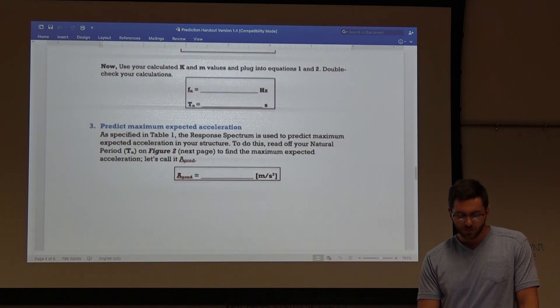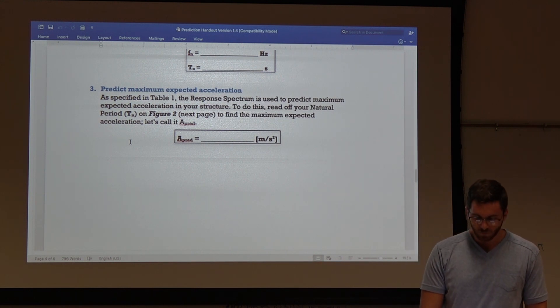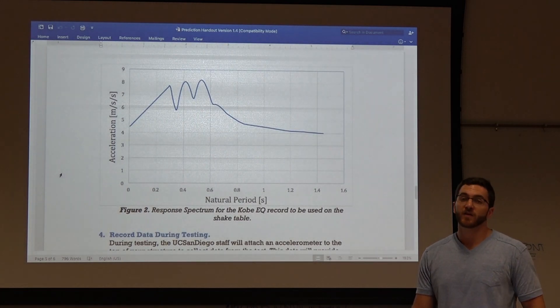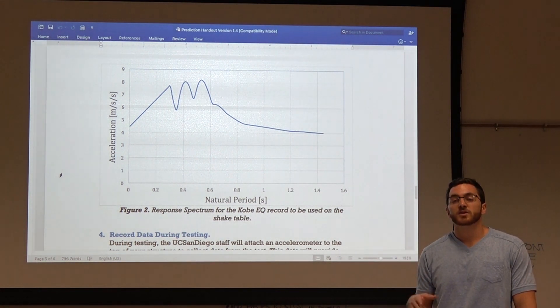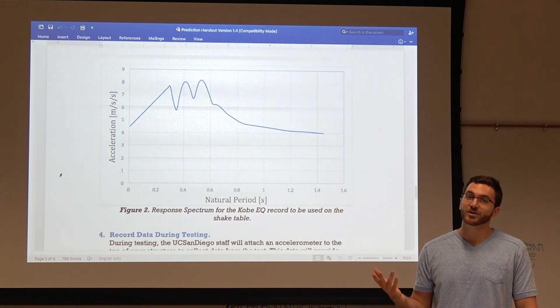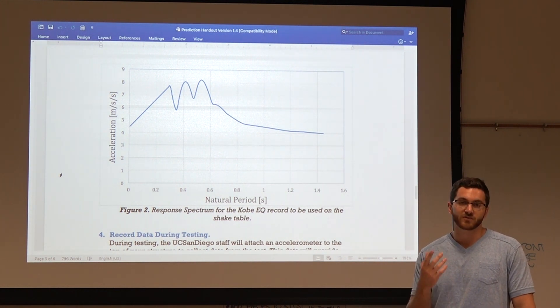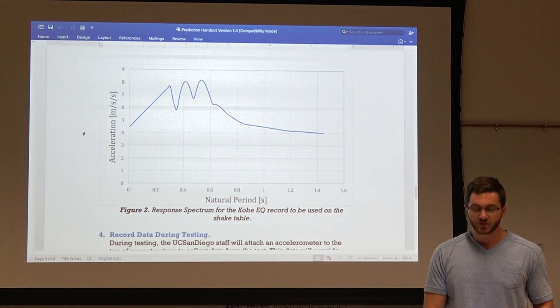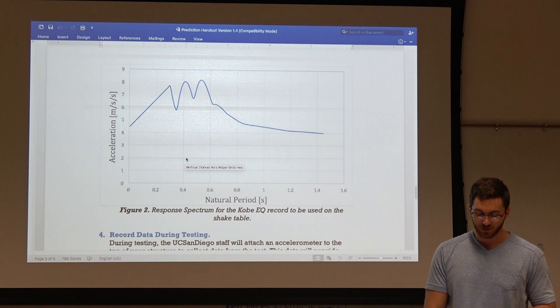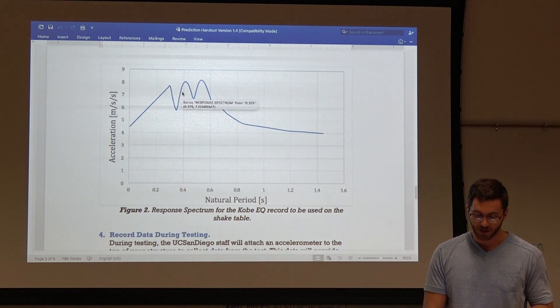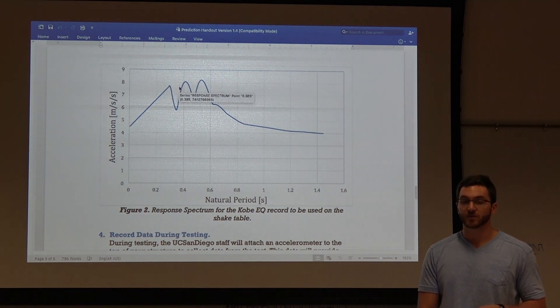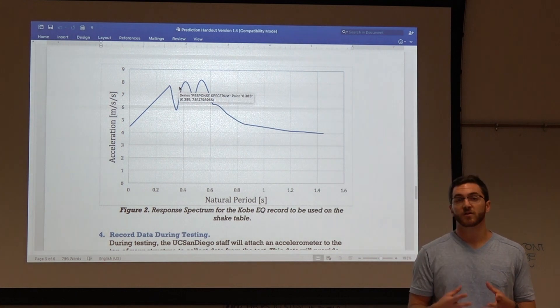Now that we have natural period, we can predict the maximum expected acceleration. And we'll do that using figure two. So, figure two is our response spectrum for the Kobe earthquake, which is the first earthquake that we'll test the structure on. Now, we only predict the acceleration for the first earthquake and not the other two, because not all of the structures will survive earthquake one. Hopefully they all do, but it's not a guarantee. So, we'll only predict the acceleration for the first earthquake. So, how do we use that? Well, once you calculate your natural period, you'll come to this graph. Let's say you calculate a natural period of 0.4 seconds. Then you'll come to this graph, you'll look at 0.4, you'll travel up a line, and you'll hit the response spectrum. And you can measure what acceleration corresponds to that natural frequency. And that will be your maximum expected acceleration during the earthquake.